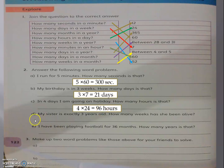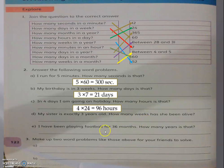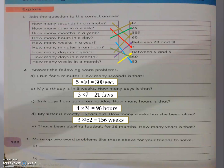Question 2D: My sister is exactly 3 years old. How many weeks has she been alive? Converting from years to weeks — big to small — so multiply. The first number is 3, and 1 year equals 52 weeks, so I multiply 3 by 52. Therefore, 3 years make 156 weeks.